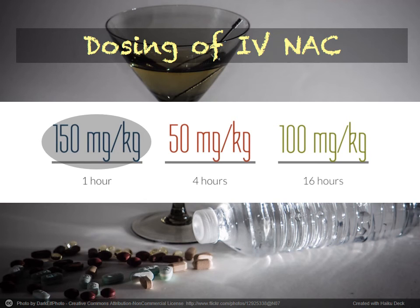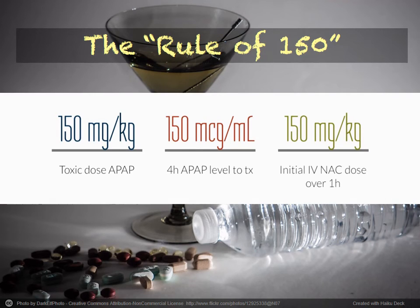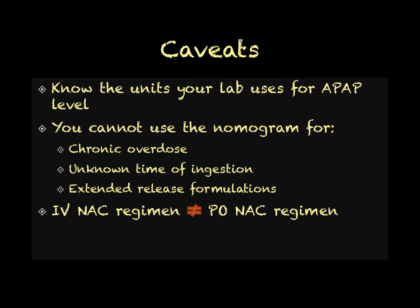Before applying this rule, you should find out what units your lab uses to measure acetaminophen levels, as some report in micromoles per liter rather than micrograms per milliliter. Note also that the nomogram does not apply to suspected chronic overdoses, unknown ingestion times, or extended-release formulations — here you may give NAC if there's any evidence of liver injury, even at levels far below the nomogram line. Lastly, the IV NAC regimen is not the same as the PO NAC regimen, which starts at 140 milligrams per kilogram and has an overall different treatment course.